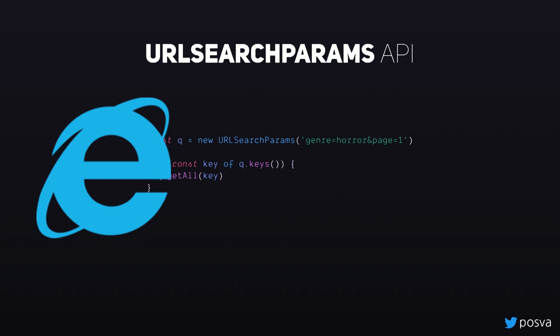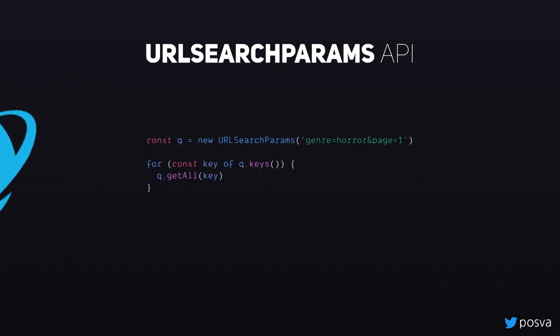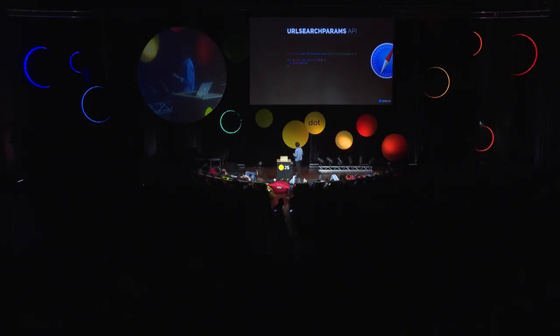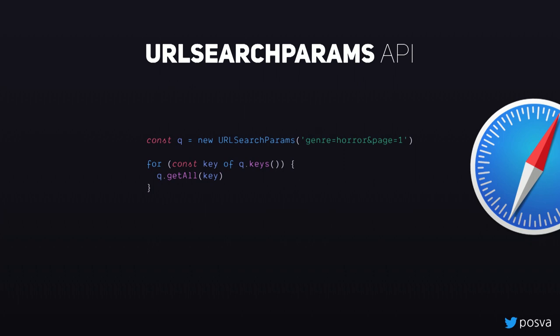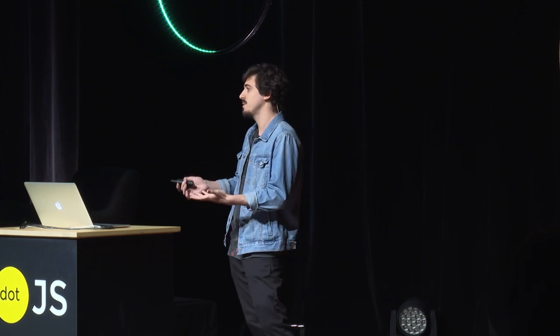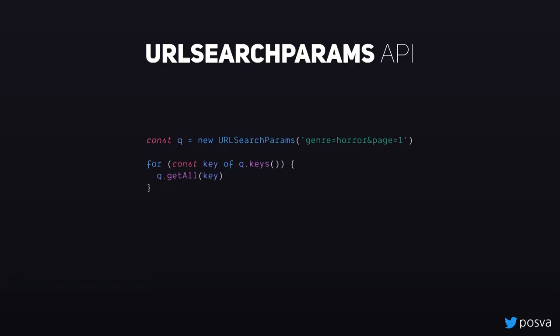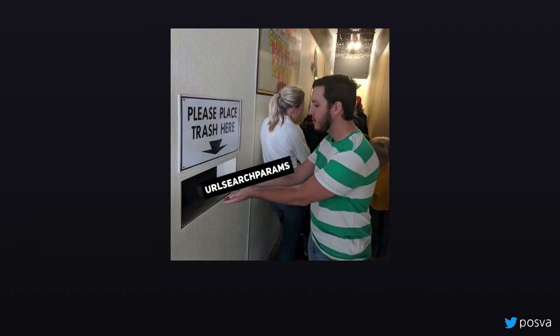So we cannot use it — there's Safari. It has a bug: it doesn't encode properly, things are not working. Well, this API is a standard, it has a specification, it works nicely, but it's not supported by every browser. And even when it's supported, you have browsers that don't do it properly. It reminds me of web components: it's there, it works, there is a polyfill for everything, but we're not going to use it. So that's what we do with URLSearchParams, which is unfortunate.